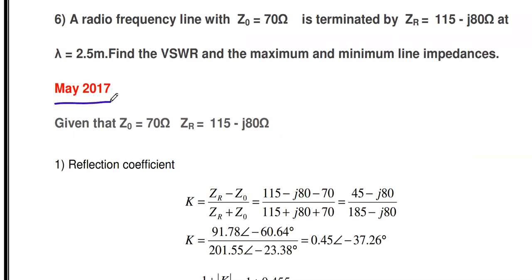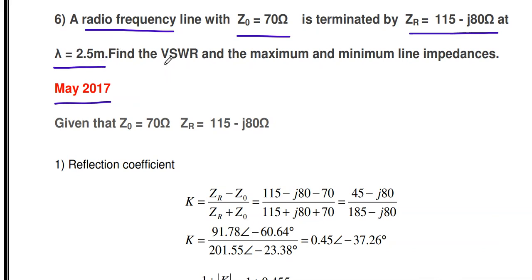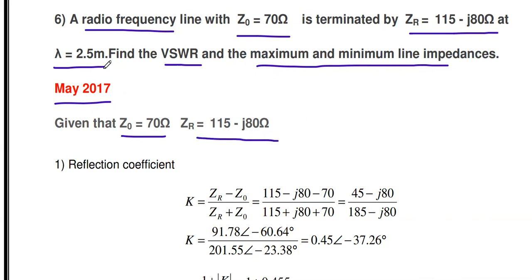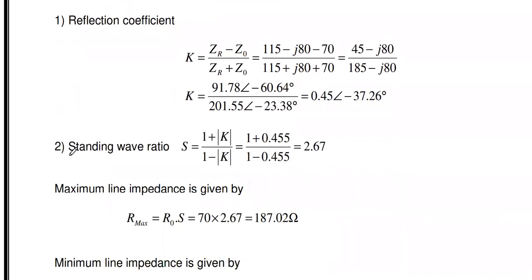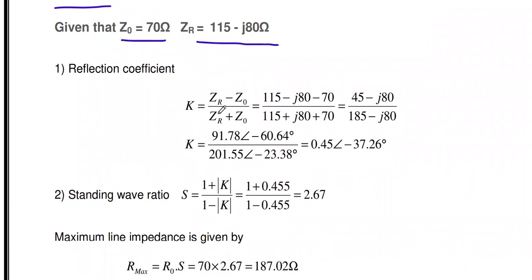The next problem (May 2017) involves a radio frequency line with Z0 = 70 Ω terminated by ZR = 115 - j80 Ω at wavelength λ = 2.5 m. Find VSWR and maximum and minimum line impedances. First, calculate reflection coefficient K = (ZR - Z0) / (ZR + Z0) = (115 - j80 - 70) / (115 - j80 + 70) = (45 - j80) / (185 - j80).